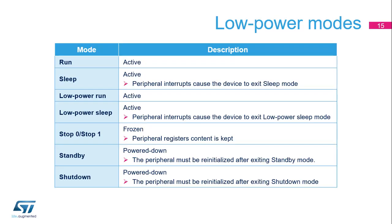The FMC is active in run, sleep, low-power run, and low-power sleep modes. An FMC interrupt can cause the device to exit sleep or low-power sleep mode. In Stop 0 and Stop 1 modes, the FMC is frozen and the content of its registers is kept. In standby or shutdown mode, the FMC is powered down and must be reinitialized afterwards.